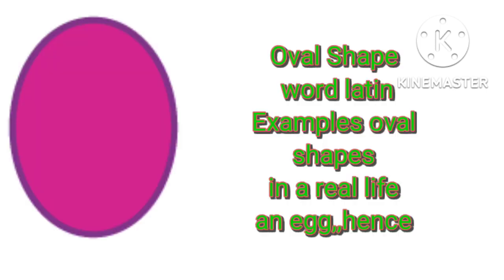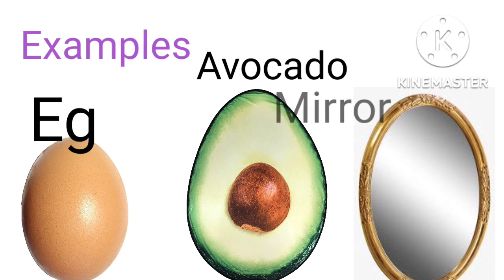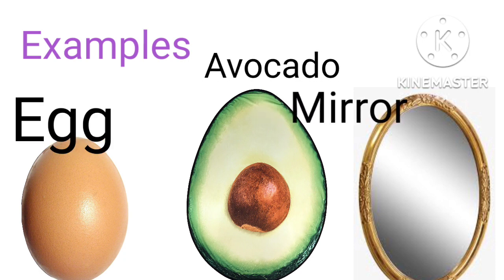Oval shapes — examples of oval shapes include avocado, mirror, and egg.